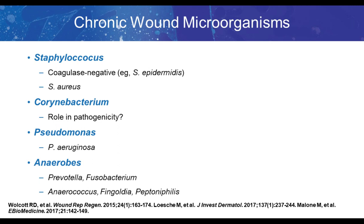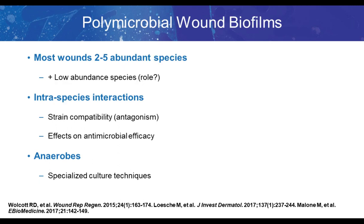One question is whether to use a polymicrobial biofilm. We know most wounds contain a polymicrobial community with two to five abundant species, and there's often a lot of low abundance species as well, though their role is not well understood. With various species, we can have interspecies interactions that affect strain compatibility — for example, certain strains of Pseudomonas aeruginosa will kill Staphylococcus aureus, so those aren't compatible. These interspecies interactions can also affect antimicrobial efficacy. If anaerobes are included, specialized culture techniques are also necessary.